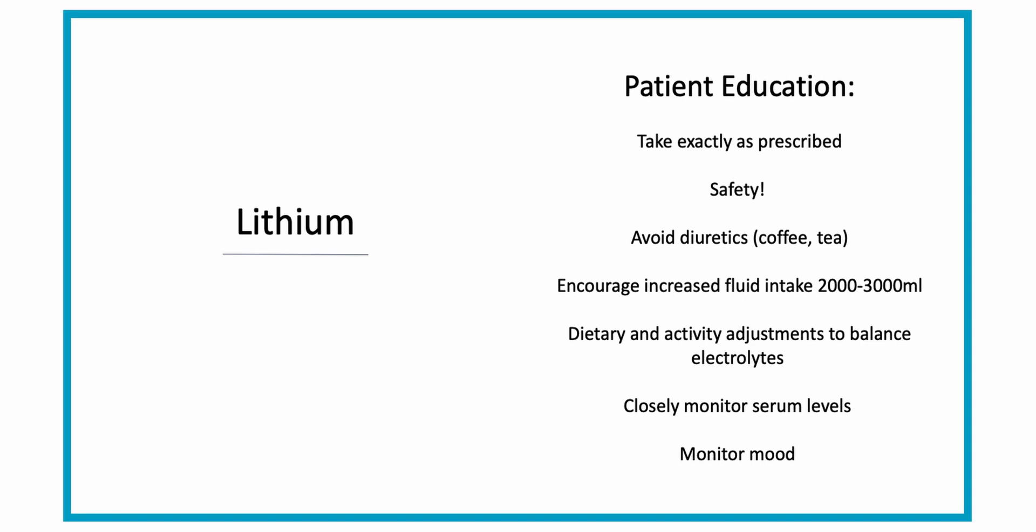You will also want to make sure your patient increases their fluid intake to 2,000 to 3,000 mLs per day to help maintain electrolyte balance. Maintaining sodium levels with some dietary adjustments will be necessary to continue with a therapeutic level and maintain their sodium levels. A moderate sodium intake diet while avoiding excessive sweating and avoiding diuretics such as coffee or tea will be very helpful.